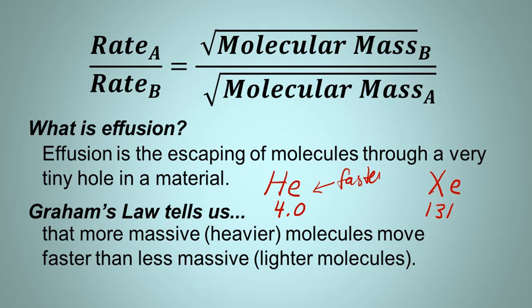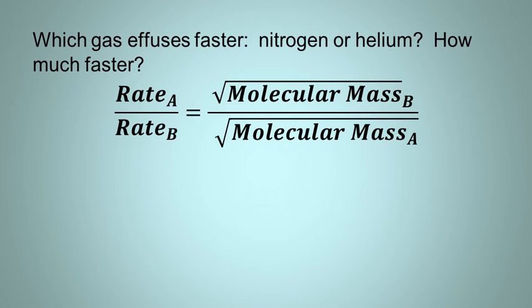Why? Because it's lighter. It's less massive. Whereas xenon is just kind of lumbering along. It's a much heavier molecule, much more massive. So let's try an example here, and we'll see how this equation works. Like I said, it looks complex. It's really not.